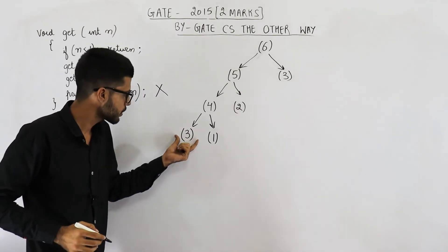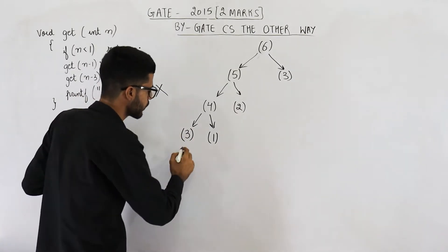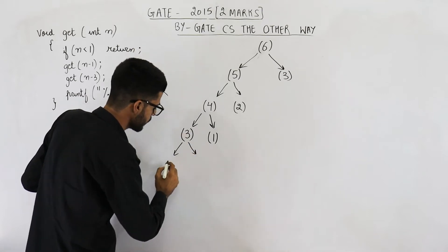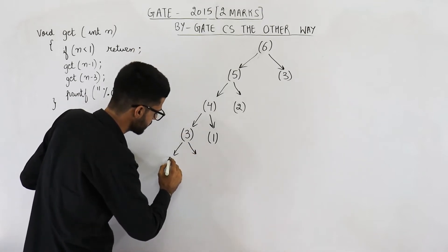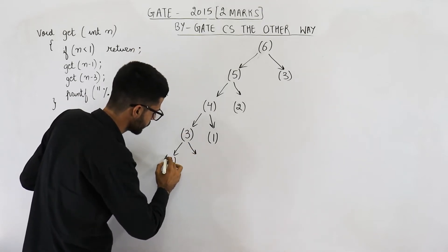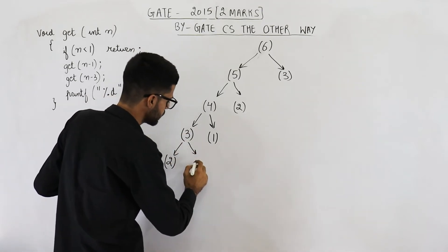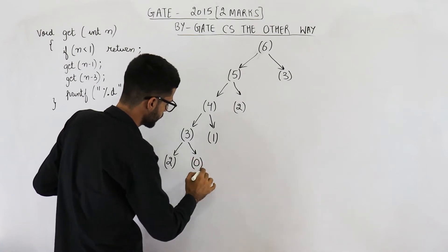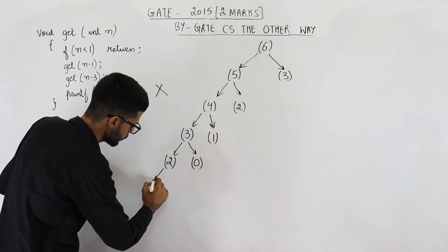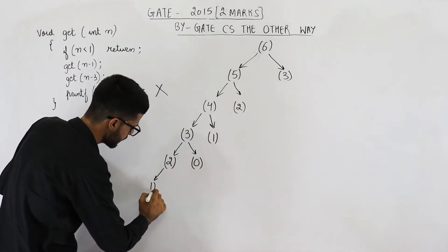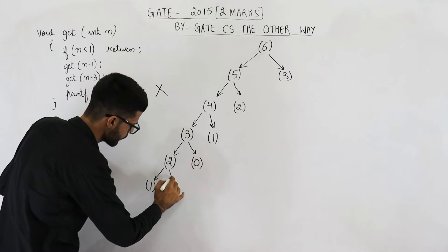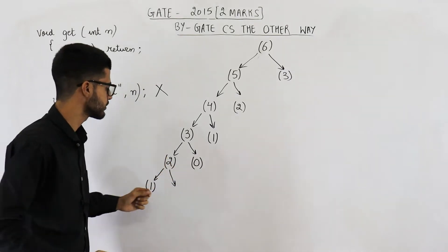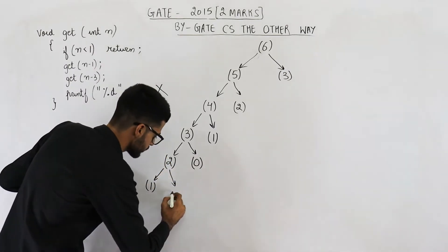Now let us talk about this function call only. Get(3) will call get(3 minus 1) which is 2, and get(3 minus 3) which is 0. Get(2) is going to call get(2 minus 1) that is 1, and get(2 minus 3) that is minus 1.